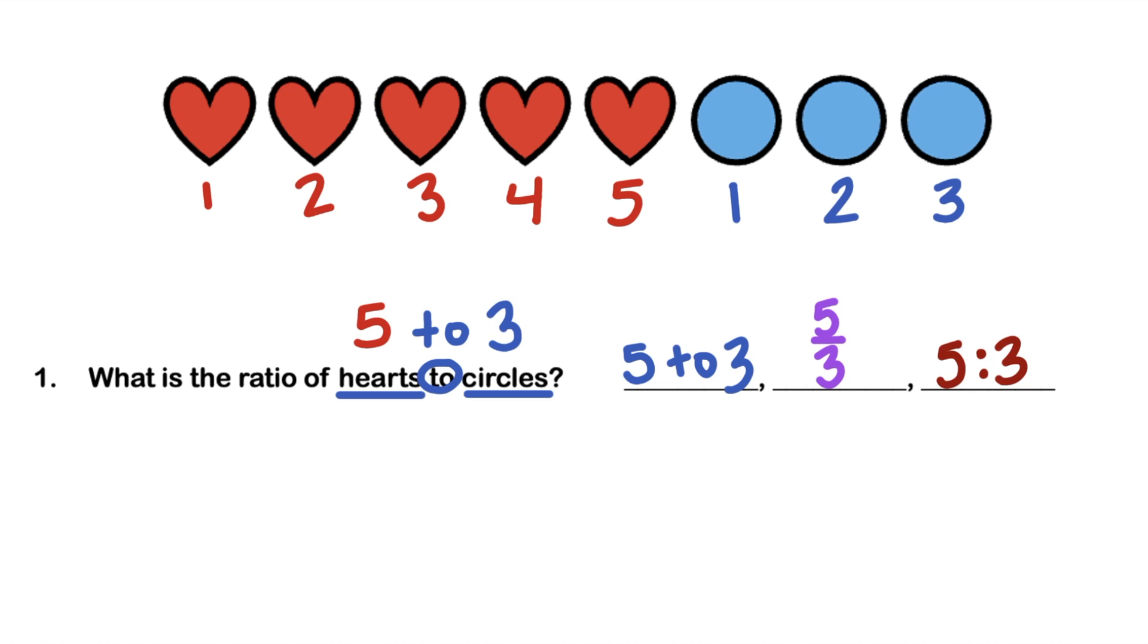Now remember, even though there are three ways to write ratios, there's only one way to read ratios. The ratio of hearts to circles is 5 to 3.